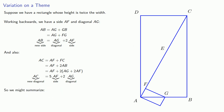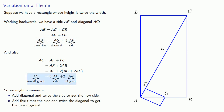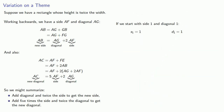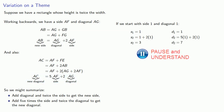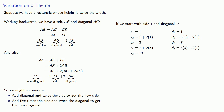To summarize: add the diagonal and twice the side to get the new side; add five times the side and twice the diagonal to get the new diagonal. Starting with side and diagonal both equal to 1: the next side is 1 + 2(1) = 3, the next diagonal is 5(1) + 2(1) = 7. The next side is 7 + 2(3) = 13, and the next diagonal is five times the side plus twice the diagonal. We can keep going.